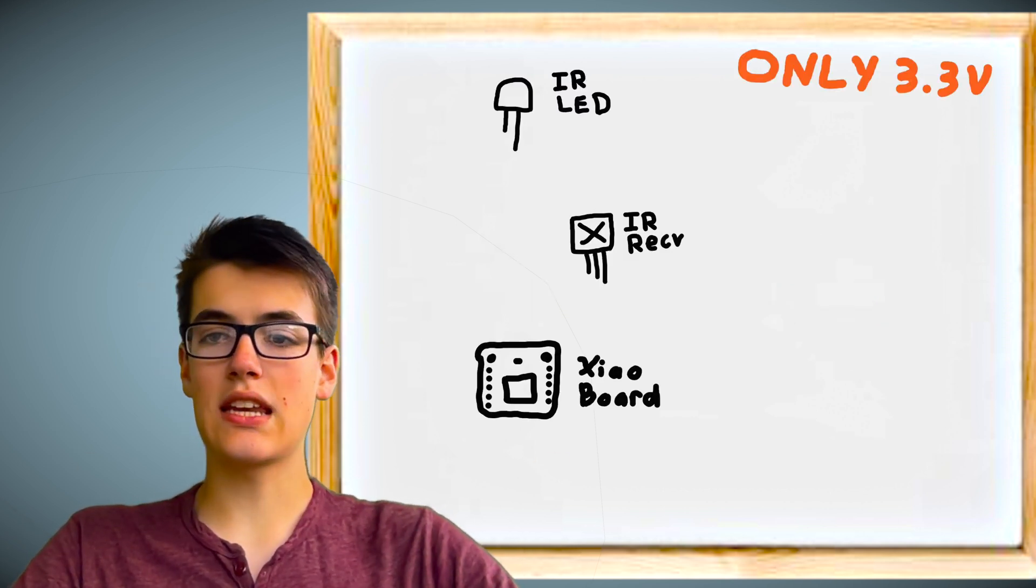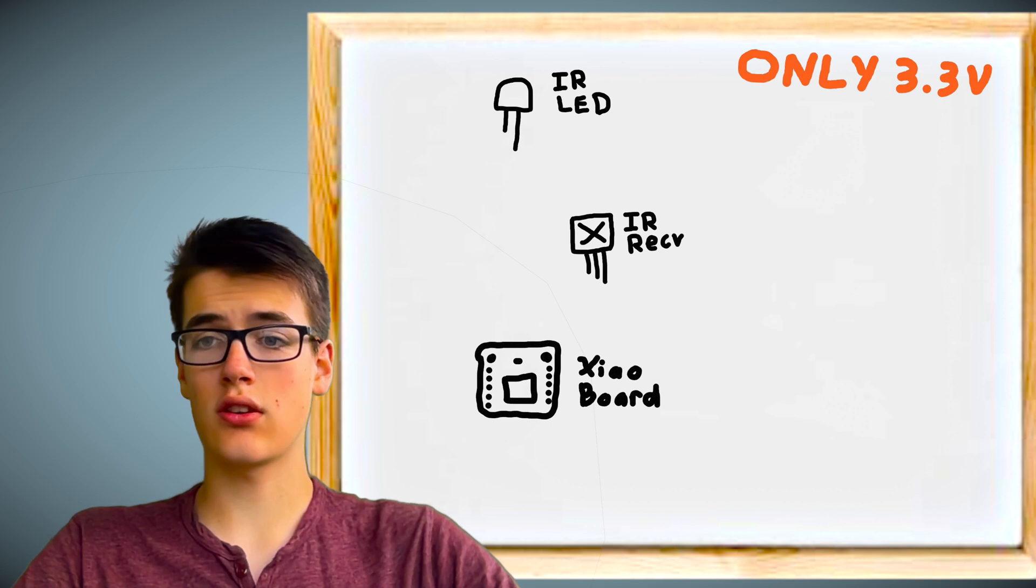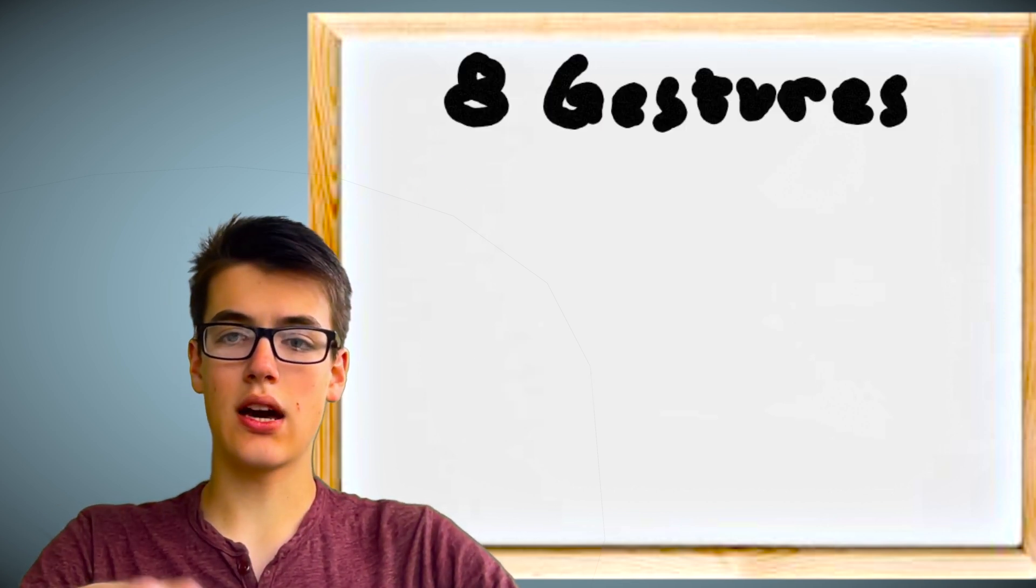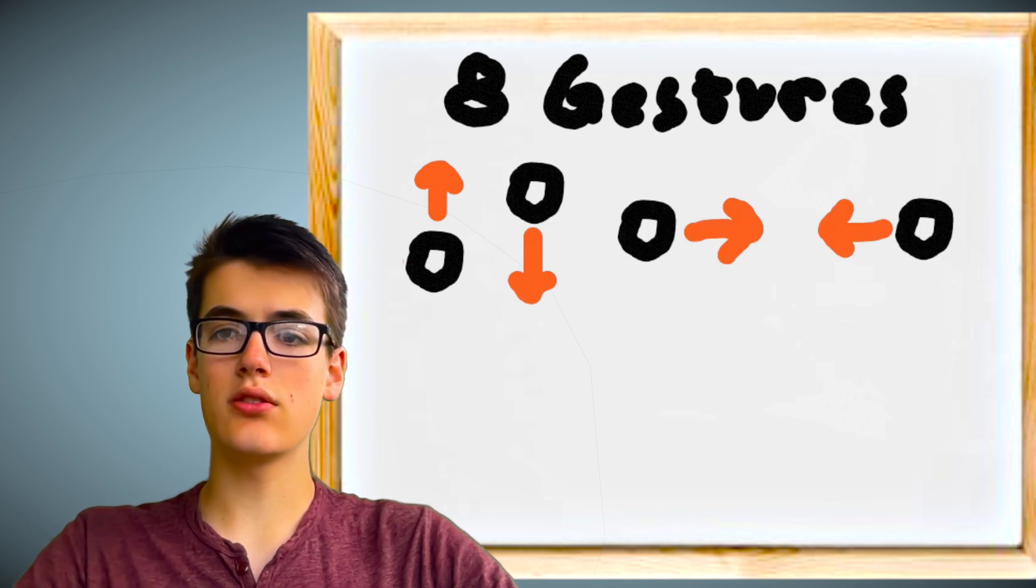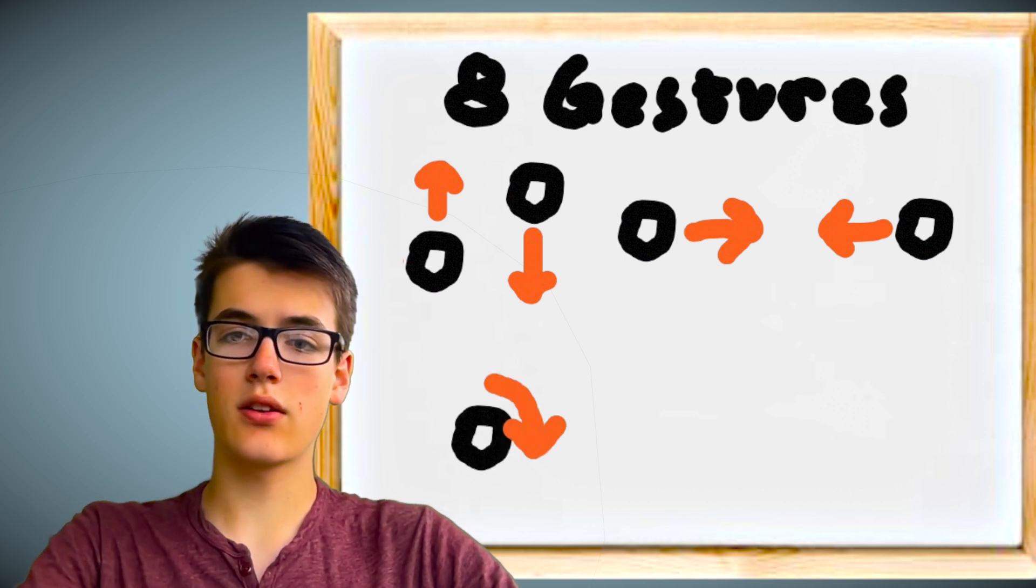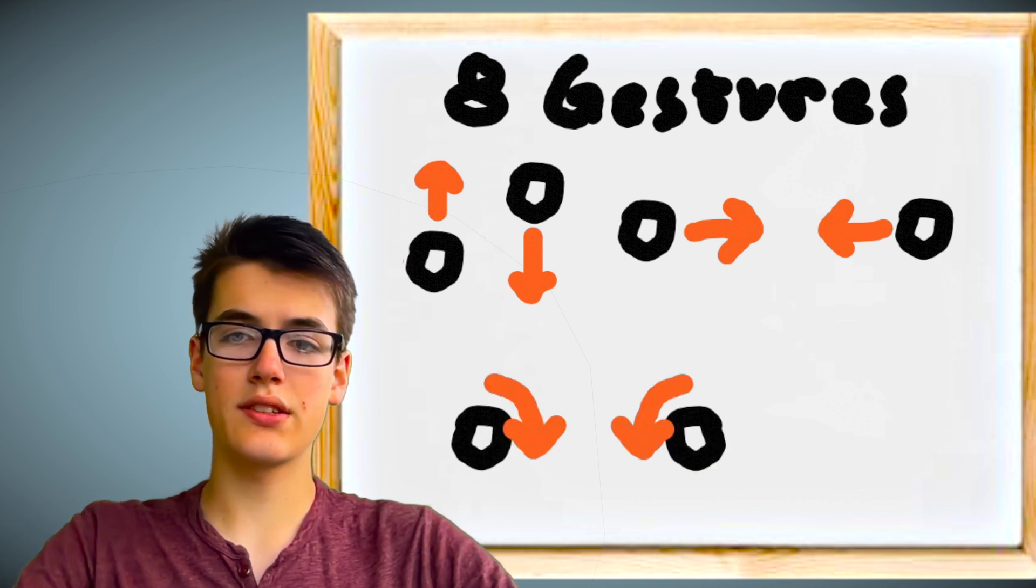So to keep there from being any confusion on which gesture the user wants, we're going to be limited to eight gestures. We'll have a flicking motion to the up, down, right, and left, which we can use for the arrows a remote usually uses to control the TV.